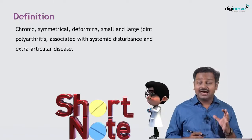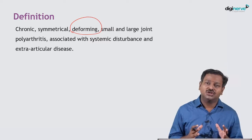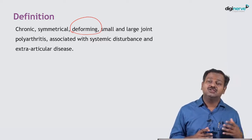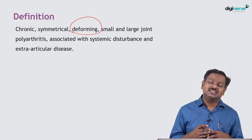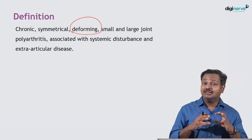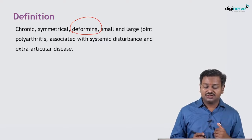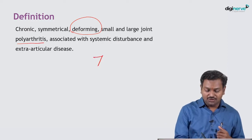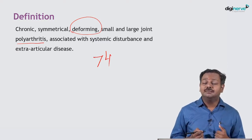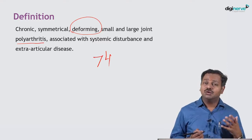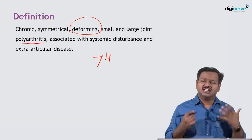Rheumatoid arthritis is defined as a chronic symmetrical, deforming arthritis. Unlike lupus or rheumatic fever where deformities are absent, in rheumatoid arthritis there is significant destruction of the joint — the cartilage, joint surface, and periarticular tissues are damaged, producing large numbers of deformities. It is a polyarthritis, meaning more than four joints are involved, usually with associated systemic features or extra-articular manifestations.